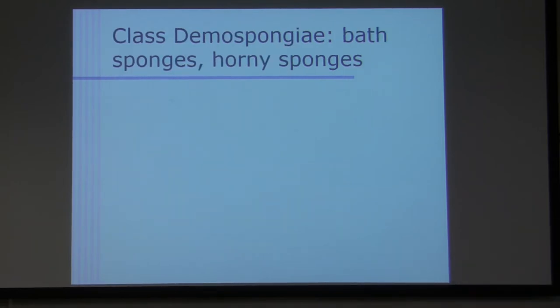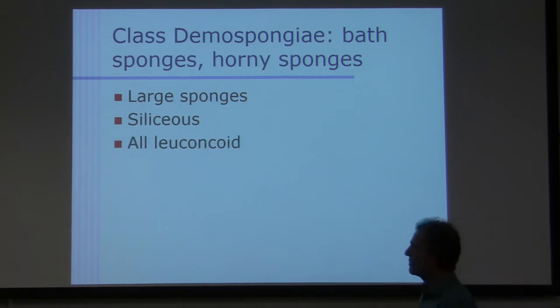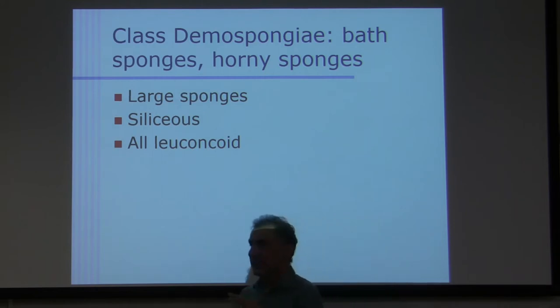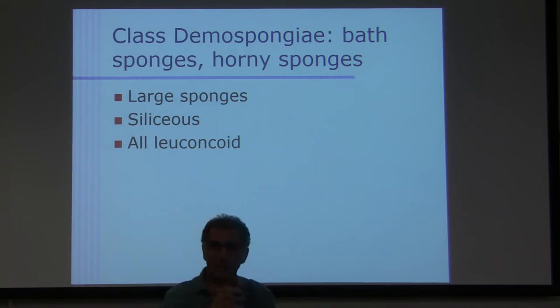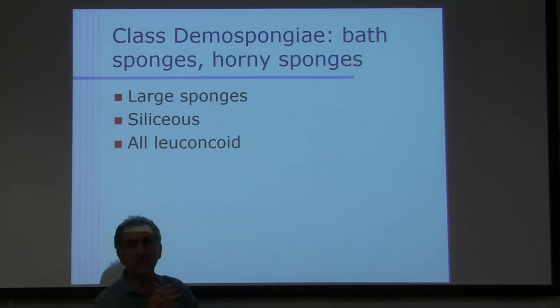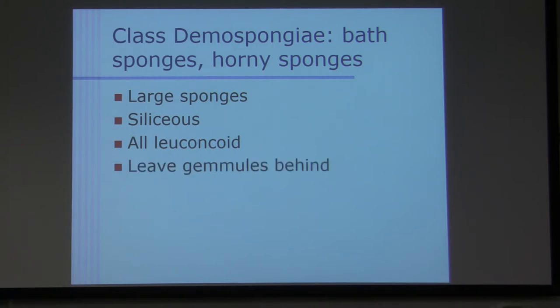Class Demospongiae: bath sponges, horny sponges, that they call them, common name. They are large sponges. They are made up of silicon. Some of them are made up of silicon. Some of them are made up of spongin. You remember that? I talked about spongin. They're leuconoid type. All of the members of this class, they have the leuconoid canal system. You remember the canal system I talked about it. All of them are, the canal system is a leuconoid type canal system.